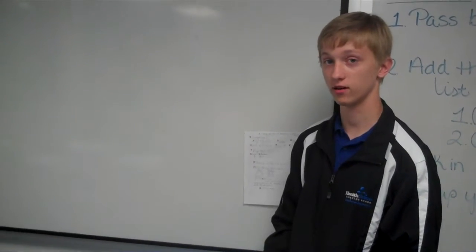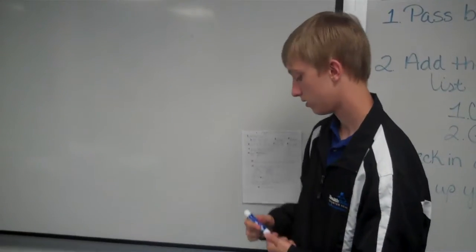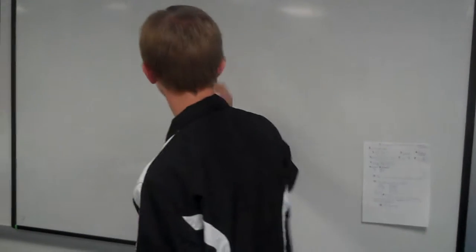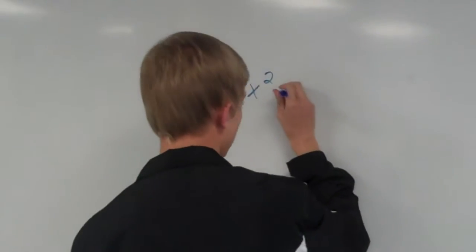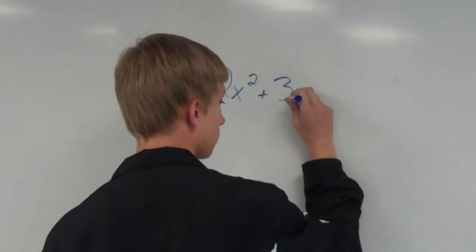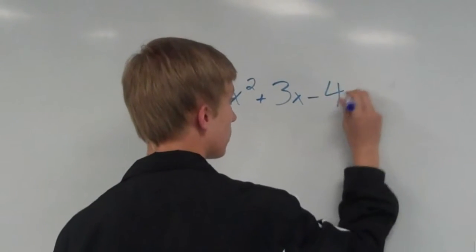I'm finding the sum and product of quadratic equations. For my first example, we'll have 2x squared plus 3x minus 4 equals 0.